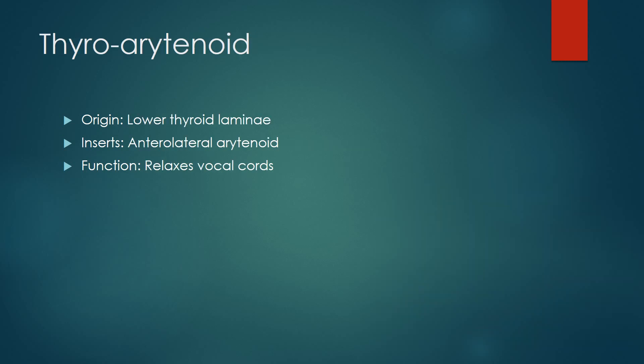The thyroarytenoid muscle originates from the lower margin of the thyroid lamina and inserts on the anterolateral arytenoids. It functions as a relaxant of the vocal cords.